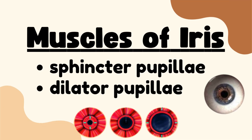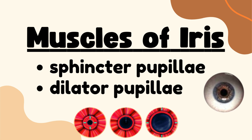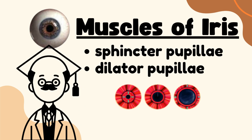Muscles of iris: sphincter pupillae and dilator pupillae. Today, we'll be diving into a fascinating and essential part of the human eye, specifically the muscles of the iris. This presentation will walk you through what the iris is, how it functions, and the muscles responsible for controlling how much light enters our eyes. Let's get started.